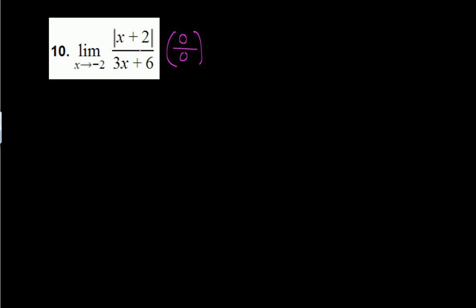We need to simplify before plugging in x equals negative 2, but it's difficult to simplify with absolute value. So we need to evaluate what the absolute value of x plus 2 is. The definition of absolute value has two parts: it equals itself if x is non-negative (greater than or equal to 0), but equals the negative of that number if x is less than 0. In either case the output is always positive.